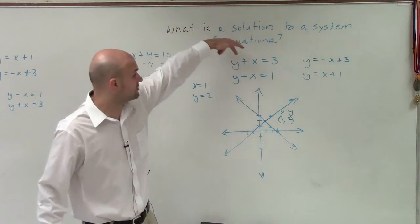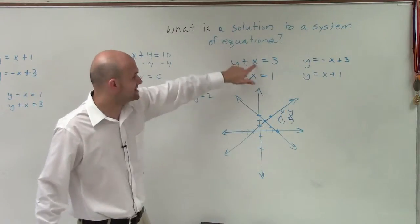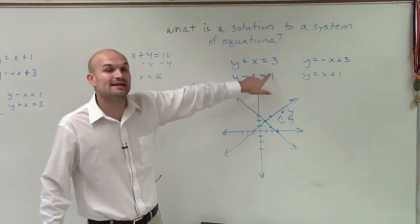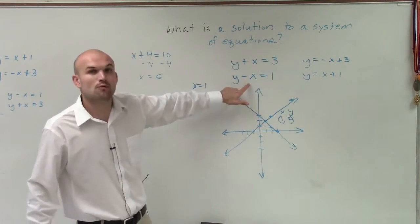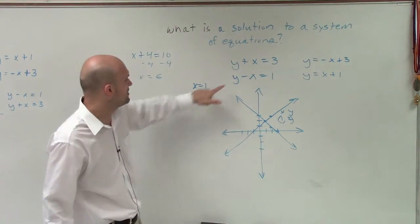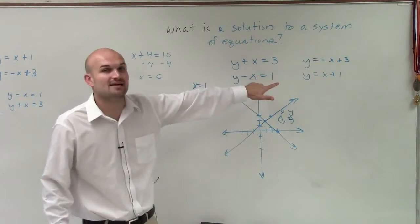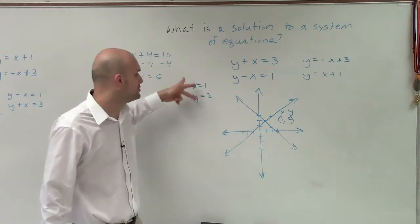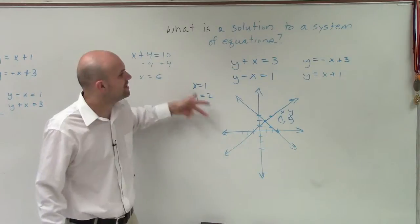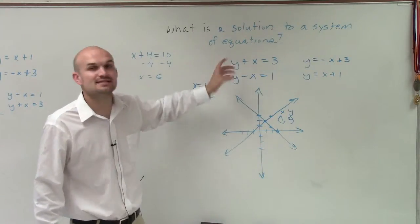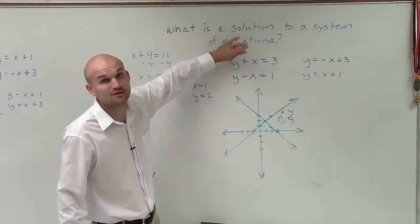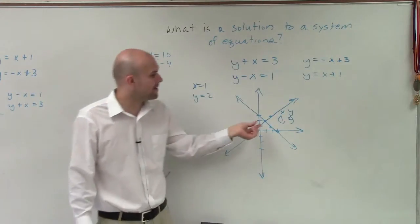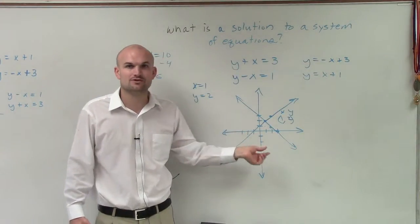Which we've already proved works for this top equation. We know x can equal 1, y equals 2. That would make this equation true. However, does that work for this equation? If I put 2 in for y and 1 in for x, does that give me 1? And yes, it does. So therefore, these are the only two coordinates that are the only two values that are going to be a solution of this system, because it works for this equation and that equation. And it's represented by the intersection of our two equations.